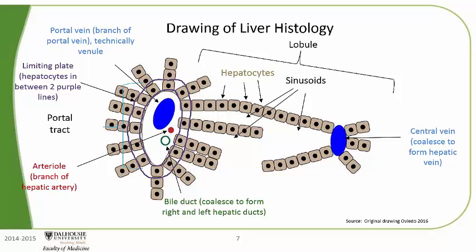Hepatocytes are epithelial cells. This may seem confusing because epithelial cells generally cover surfaces. Hepatocytes are derived from the foregut embryologically — the foregut is lined by a surface epithelium, so the liver is an epithelial tissue because it is derived from the foregut. The sinusoids are a vascular space in between the hepatocytes. The central veins coalesce to form the hepatic vein, which leaves the liver.